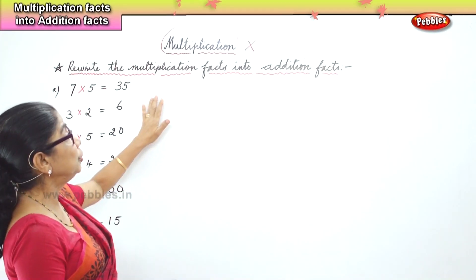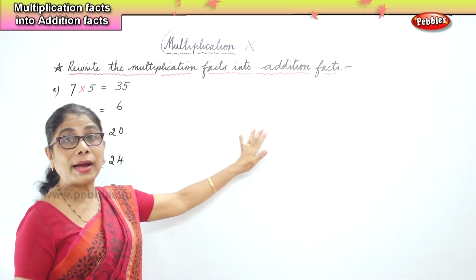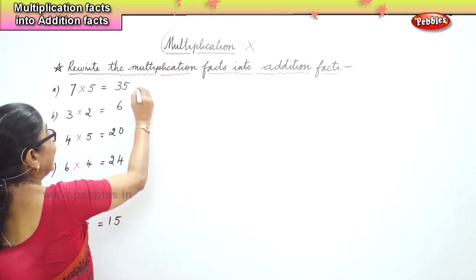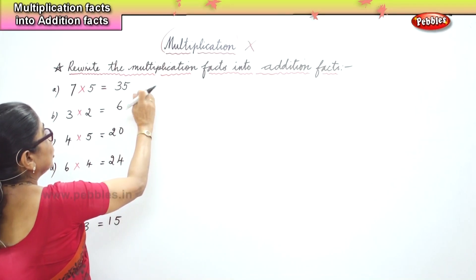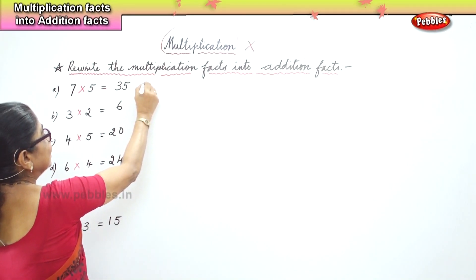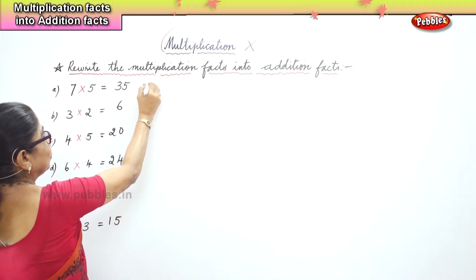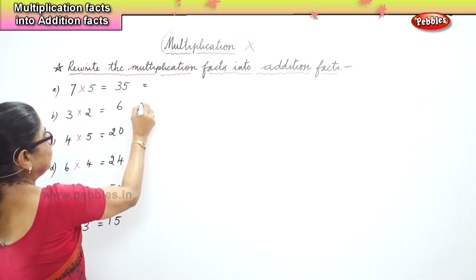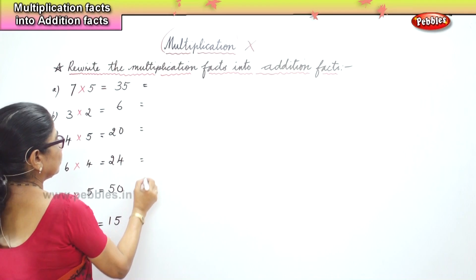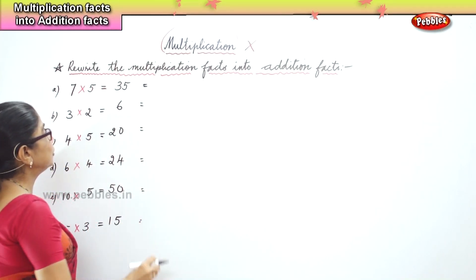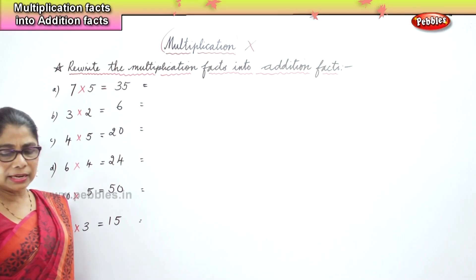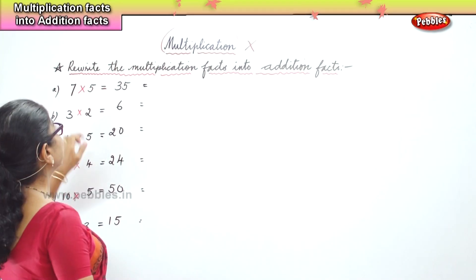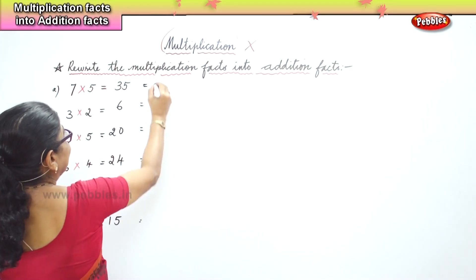Now what are we going to do? You are going to write the addition facts for all of these. First of all, you have seven. How many times seven? Five times.